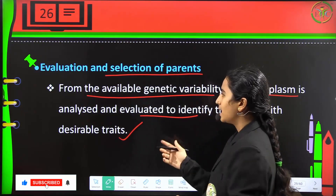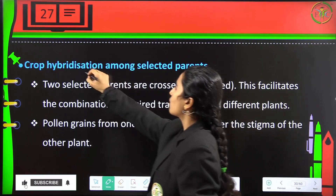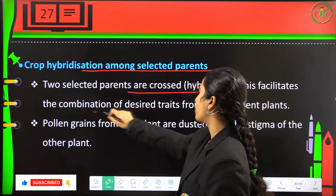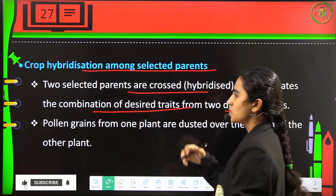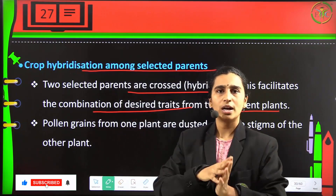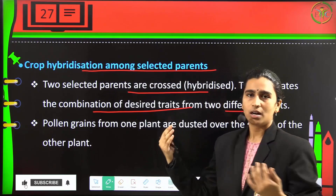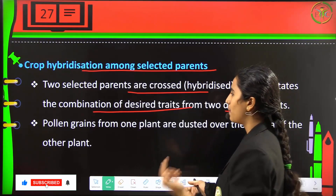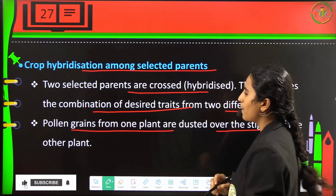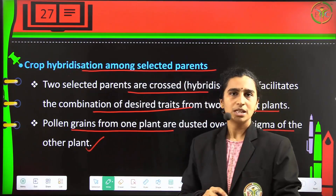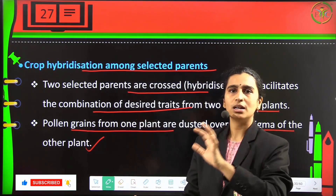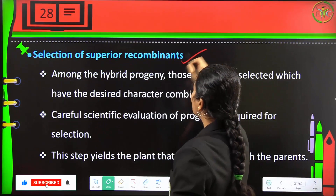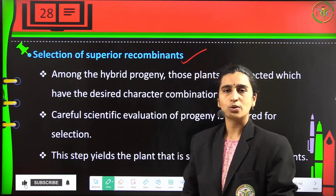The third step is crop hybridization among selected parents. Two selected parents are crossed — hybridized — to facilitate the combination of desired traits from two different plants. Two plants with different proteins are combined so the single product has the nutritional value of both. Pollen grains from one plant are dusted over the stigma of the other plant to achieve this hybridization.